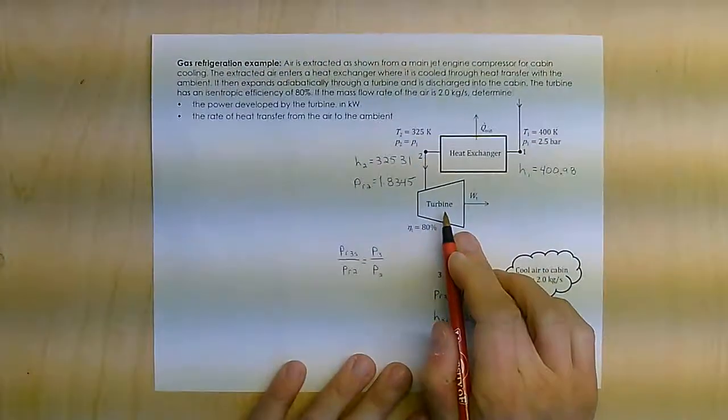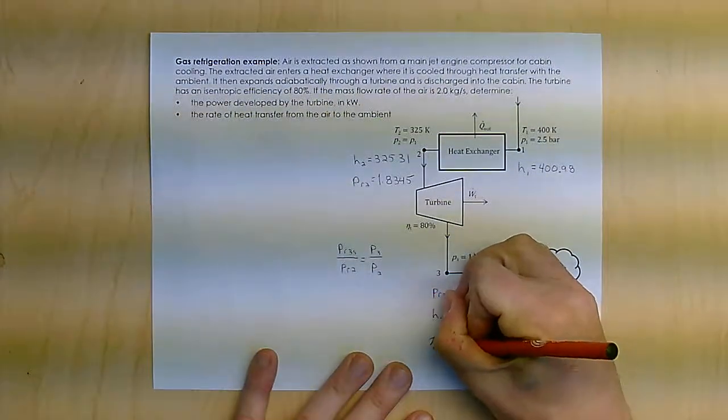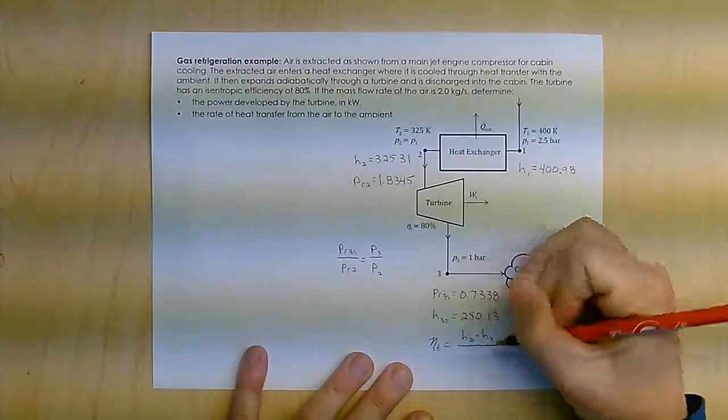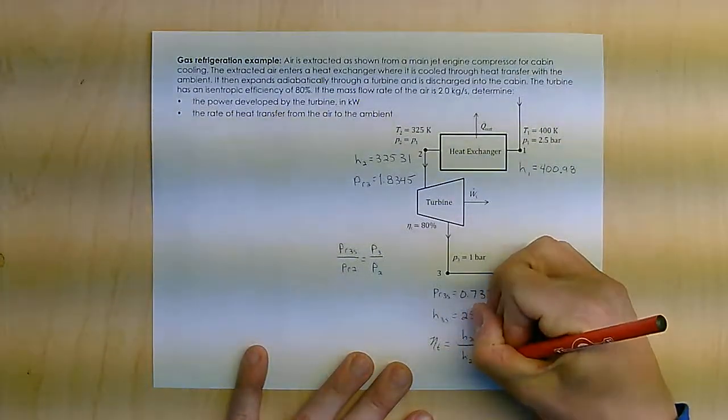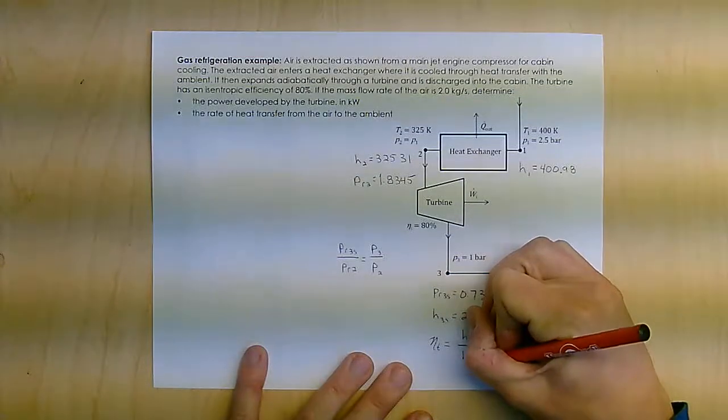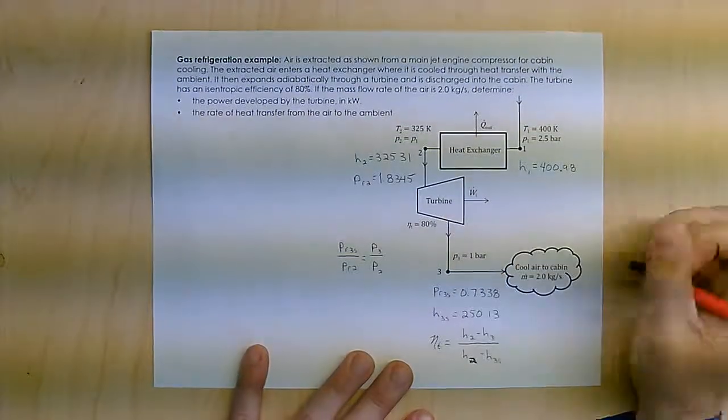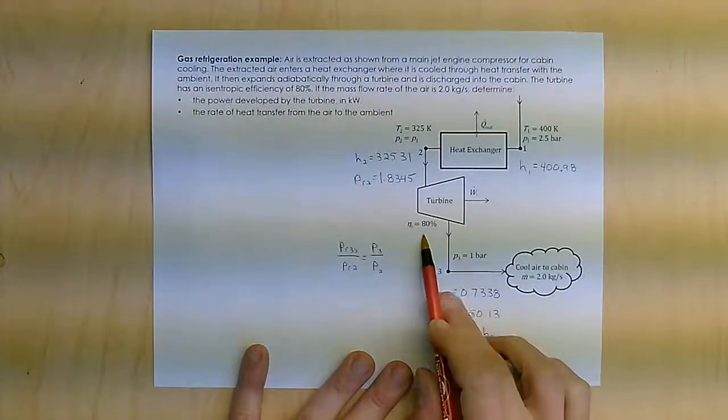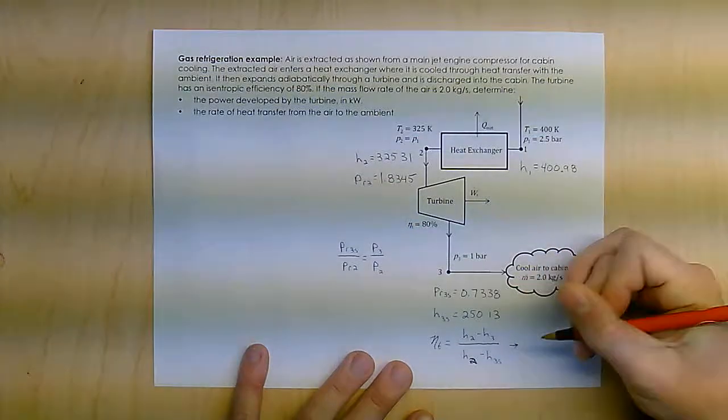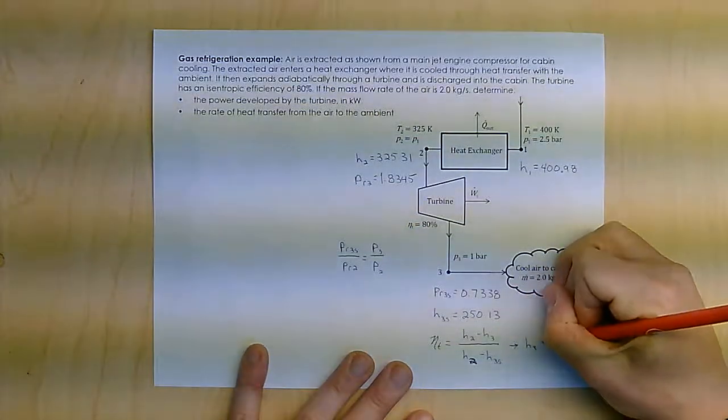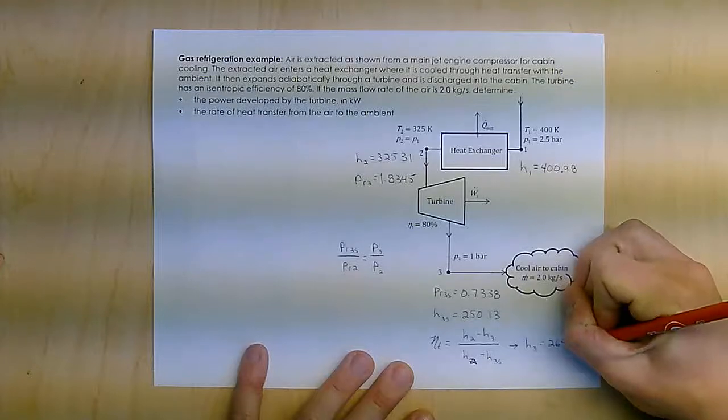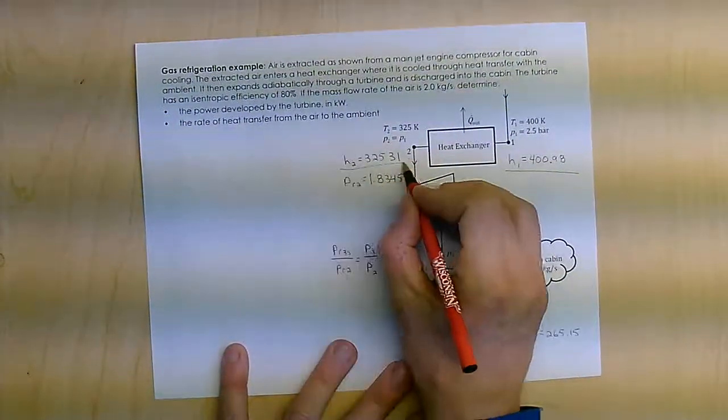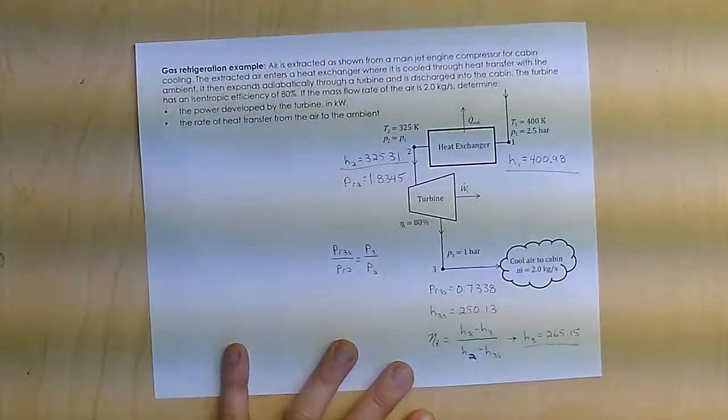Then the fact that I know my turbine efficiency is 80%, so I know that my turbine efficiency is defined as H2 minus H3, the actual performance of the turbine over the ideal performance of the turbine. This is 80%. From this, I can calculate that the actual H3 is 265.15. So now I've set H1, H2, and H3.